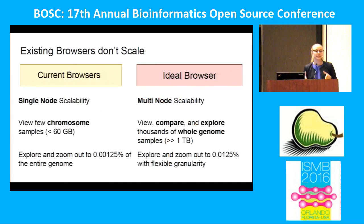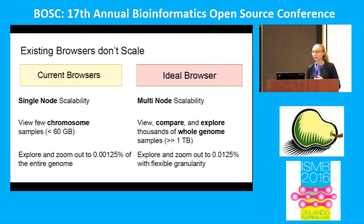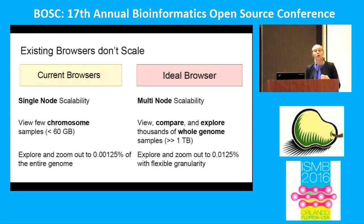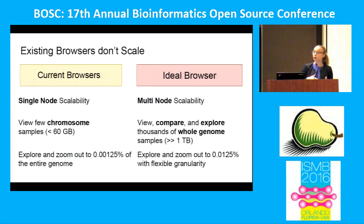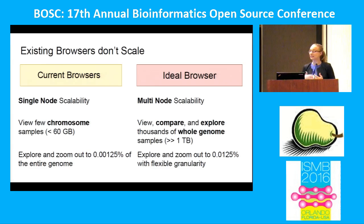Let's take a look at the current state of the art for genome browsers. Currently, genome browsers are only single-node scalability, meaning we can only view a few chromosomes at a time — up to about 60 gigabytes or whatever you can fit on your local laptop. Additionally, tools only view about 0.00125% of the whole genome. But what if we don't know what we're looking for? It might be more useful to zoom out farther and get summary statistics on regions of interest.